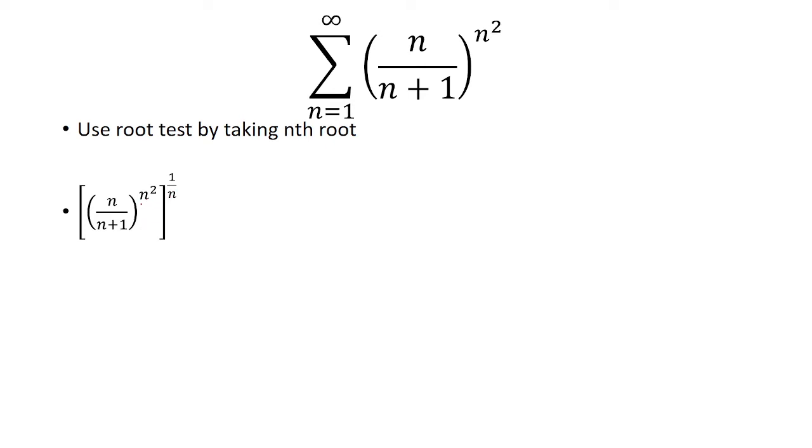and with the nth root, we have an exponent and another exponent. So whenever you have two exponents like this, you multiply them. So n squared times 1 over n is just n.